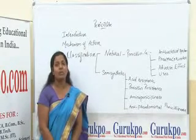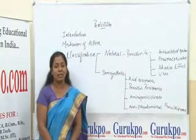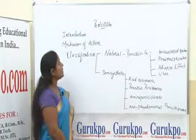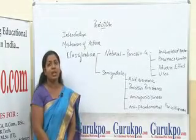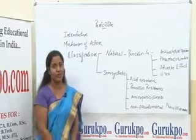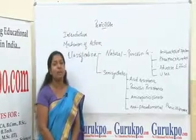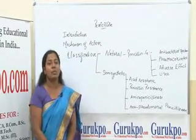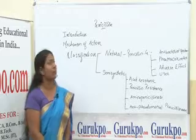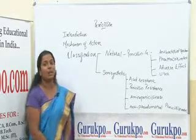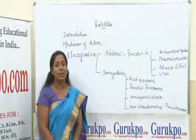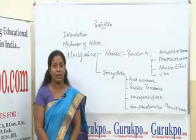Transpeptidase makes the cell wall rigid, and Penicillin forms a beta-lactam active ring which decreases the production of transpeptidase. Because of this decreased production of transpeptidase, peptidoglycan is also decreased, causing a weak cell wall, and the bacteria are easily destroyed.